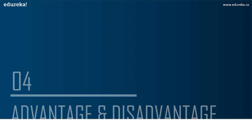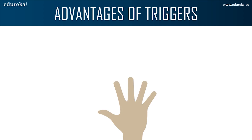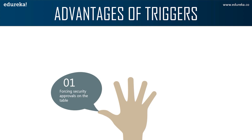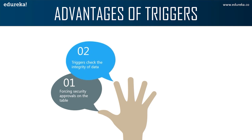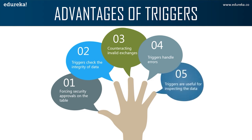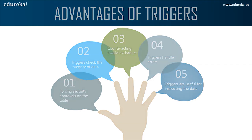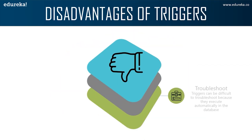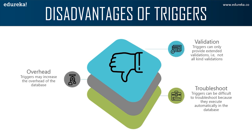Let's look at the advantages of a trigger. First: forcing security approvals on tables in the database. Second: triggers provide another way to check data integrity. Third: triggers counteract invalid transactions. Fourth: triggers handle errors from the database layer. Fifth: triggers are useful for inspecting data changes in a table. For disadvantages: triggers can only provide extended validation — not all kinds. Simple validations like NOT NULL, UNIQUE, CHECK, and FOREIGN KEY constraints cannot be used in a trigger. Triggers may increase database overhead, and they can be difficult to troubleshoot because they execute automatically and may not be visible to client applications.